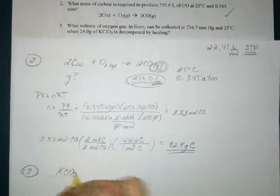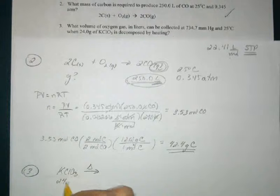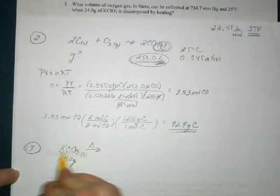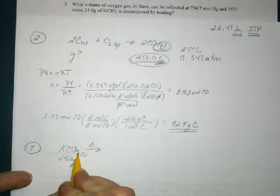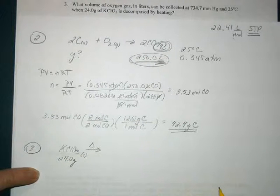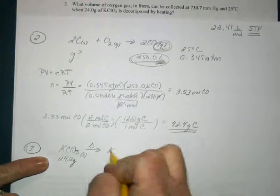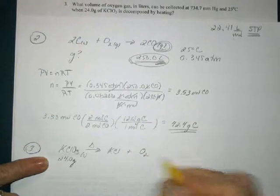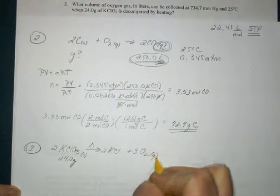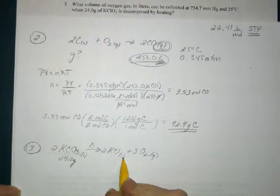Decomposition of a metal chlorate. I'm imagining, because I'm given grams of this, that it's a solid — and it definitely is. This is an ionic compound which we know will be a solid at room temperature and pressure, a white solid in fact as most ionic compounds are. The decomposition of a metal chlorate gives us a metal chloride and oxygen gas. We would need a 2, a 2, and a 3 to balance.